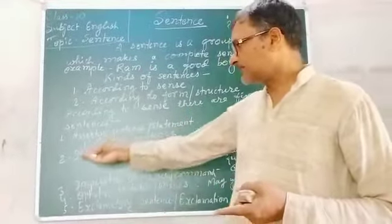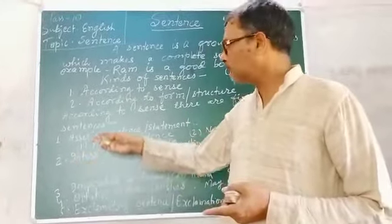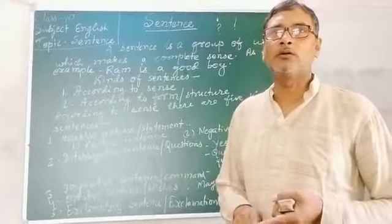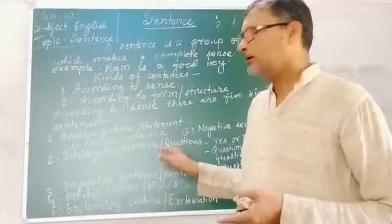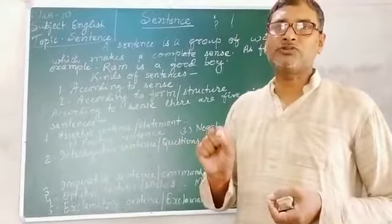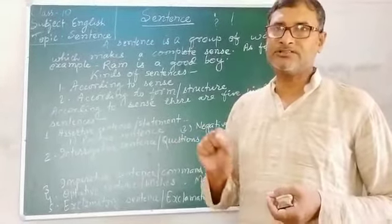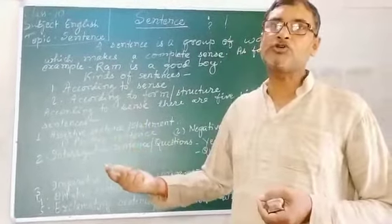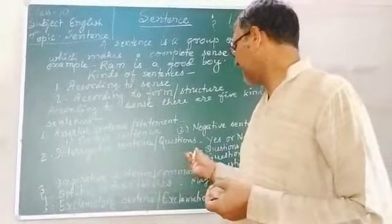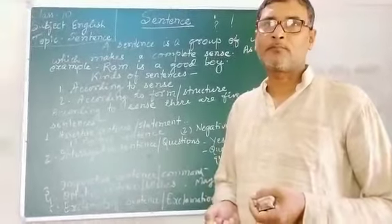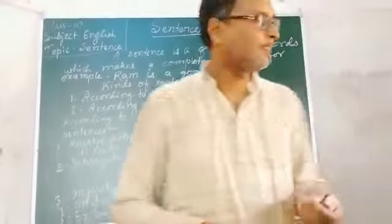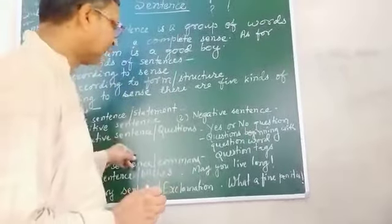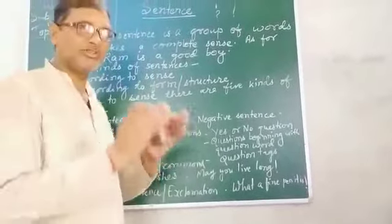The second kind of sentence is the interrogative sentence, which is also called a question. In this sentence, a question is asked. This sentence states about any question, and it ends with a question mark. That is the identification of an interrogative sentence.